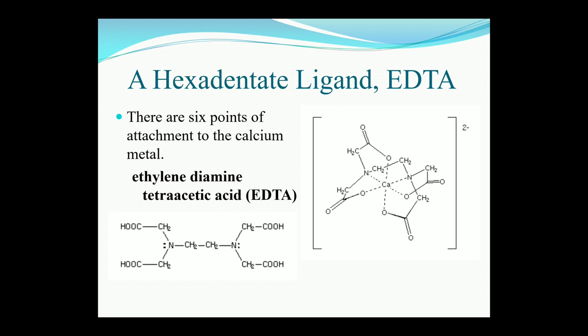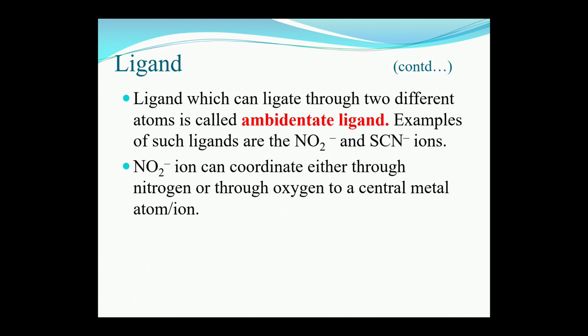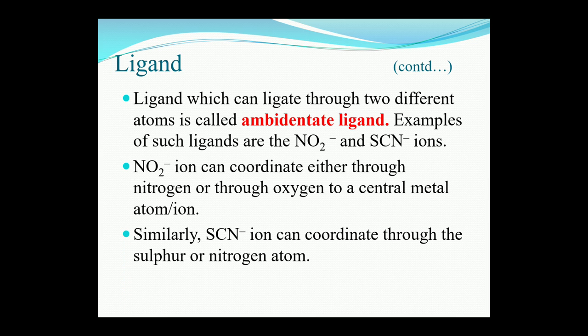A hexadentate ligand example: here you can see there are six points of attachment to the calcium metal, so it is known as ethylenediamine tetraacetic acid, EDTA. On the left-hand side you can see the formula of EDTA and how there is a formation of chelate complexes; on the right-hand side is the full formula. Ligands that can coordinate through two different atoms are called ambidentate ligands — examples are nitrite ion and thiocyanate ion. Nitrite ion can coordinate either through nitrogen or through oxygen, and thiocyanate ion can coordinate through sulfur or nitrogen.